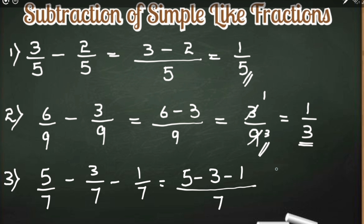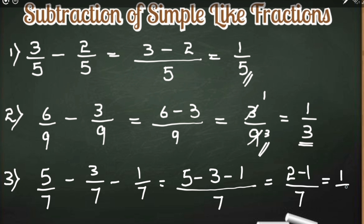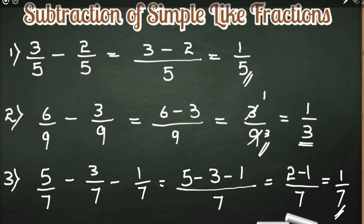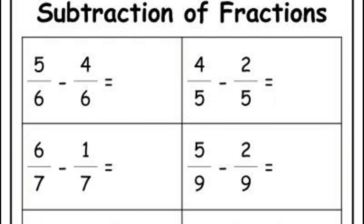Let us subtract the first two numbers first: 5 minus 3 gives 2, so this becomes 2 minus 1 by 7. In the next step, 2 minus 1 is 1, and we get 1 by 7 as our answer. This is how we do subtraction of simple like fractions — we just subtract the numerators and the denominator remains the same.